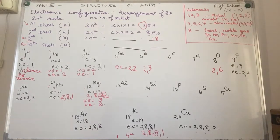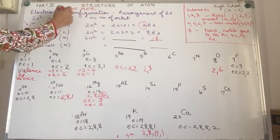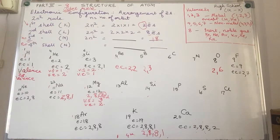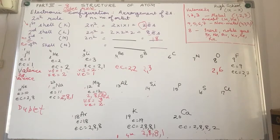The number of valence electrons also helps us determine the valency of an element. Any element will try to have 8 electrons in its outermost shell — this is called the octet rule (octa = 8). Any element with 8 electrons in its valence shell is stable; if not, it tries to acquire 8. The exception is smaller atoms like hydrogen and helium, which follow the duplet rule — they need only 2 electrons in the valence shell.